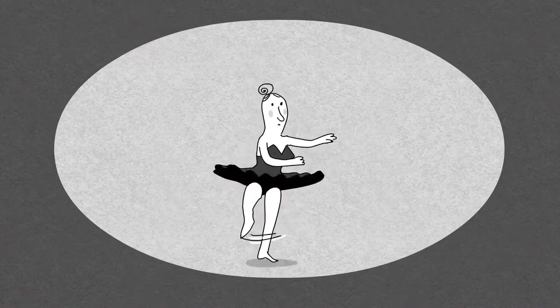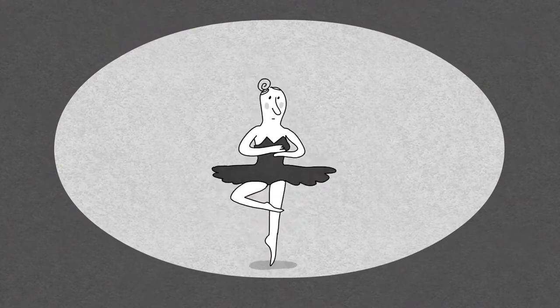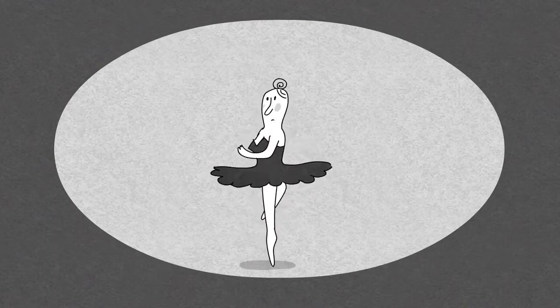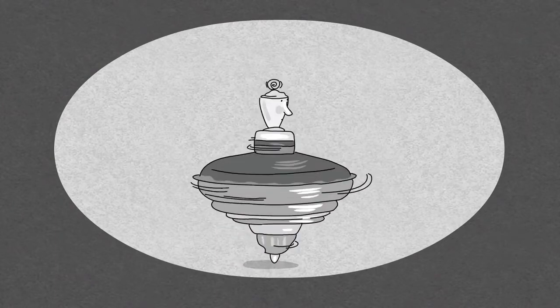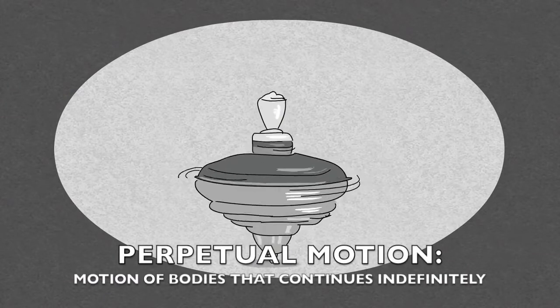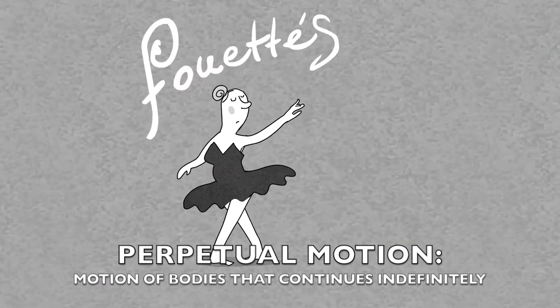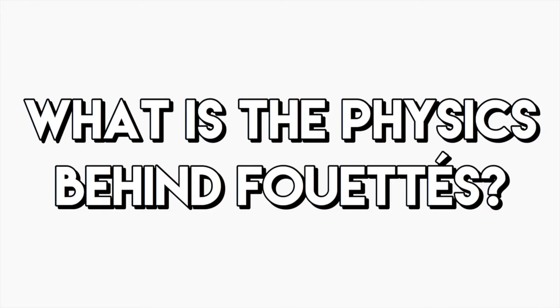In ballet, there is a move where the dancer bobs up and down on one pointed foot and keeps spinning around. In those few seconds, the dancer appears like a human torque in perpetual motion. This move is called flatties. So what is the physics behind flatties?